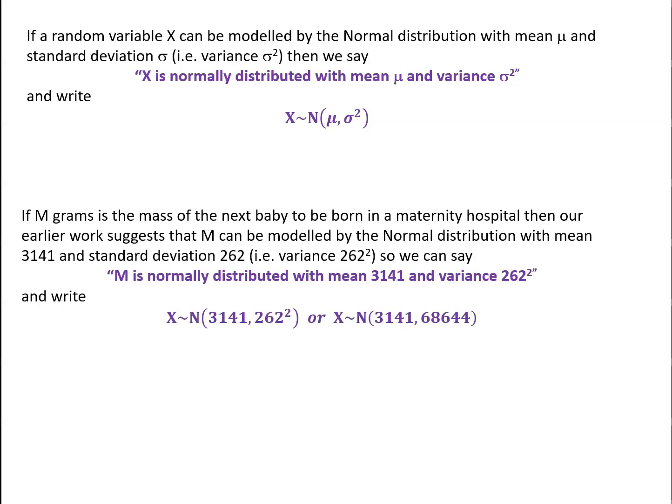So in the example that we've just been looking at, if m grams is the mass of the next baby to be born in a maternity hospital, then our earlier work suggests that m can be modeled by the normal distribution with mean 3,141 and standard deviation 262, which is equivalent to saying that the variance is 262 squared. So we can say that m is normally distributed with mean 3,141 and variance 262 squared. And we can write that as either saying that x is N(3141, 262²), or saying that x is N(3141, 68644), because 68,644 is the value of 262 squared.